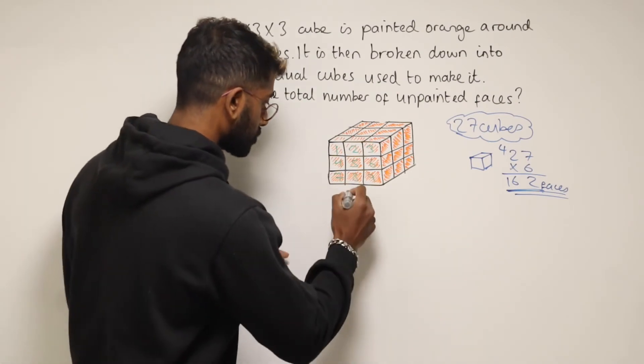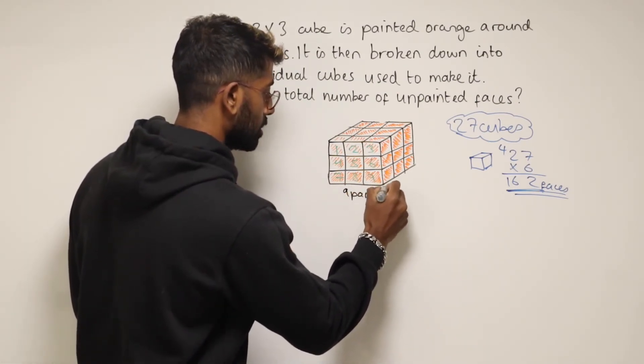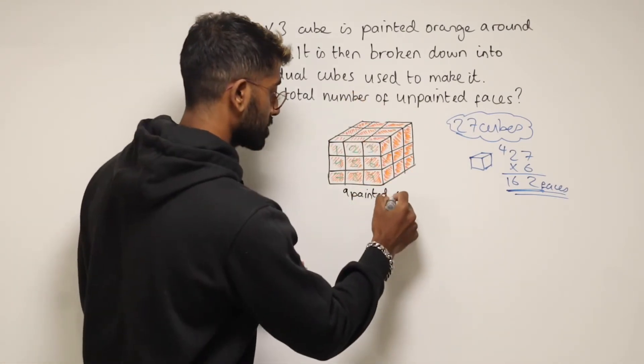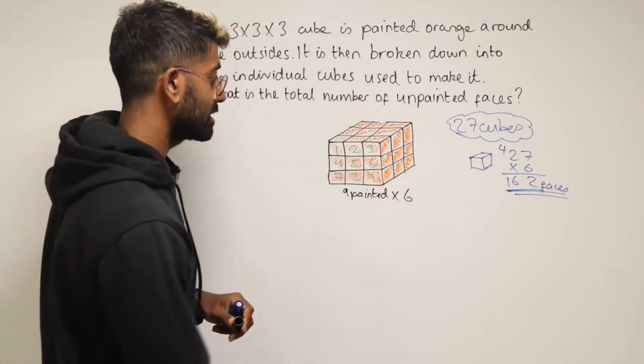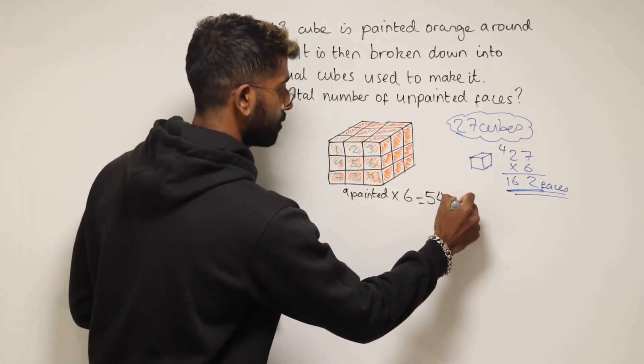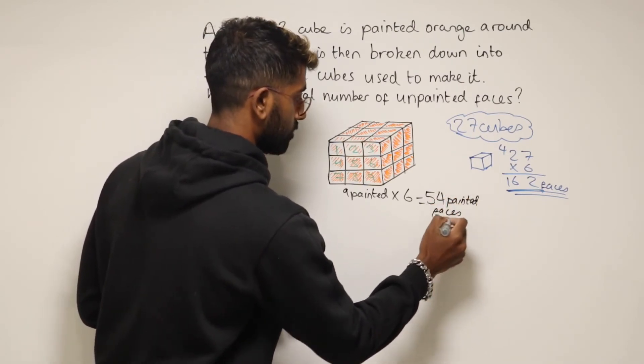So we've basically got nine painted faces on all six sides of this cube. What we can do is just times this by 6. So 9 times 6 is going to give me 54 painted faces.